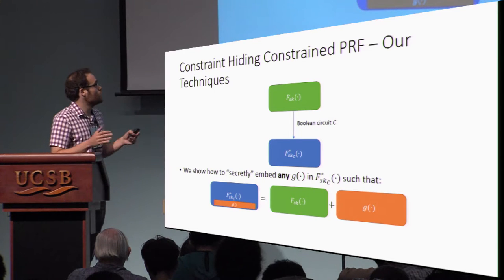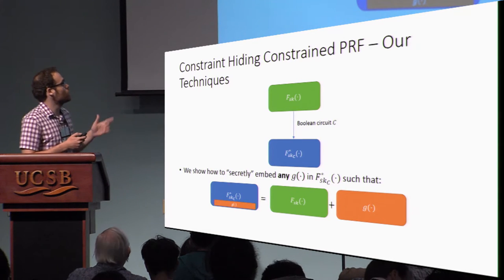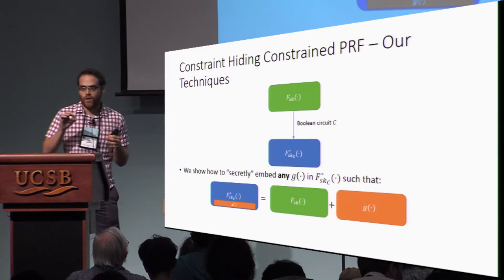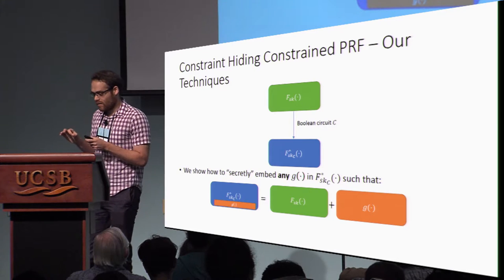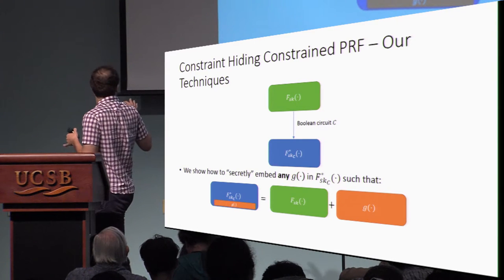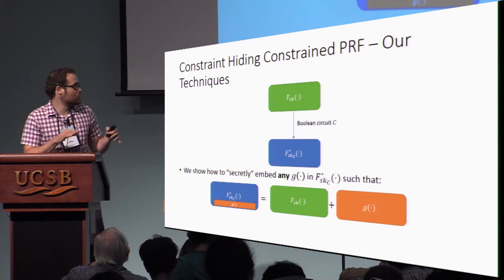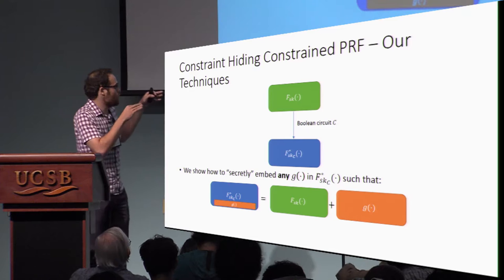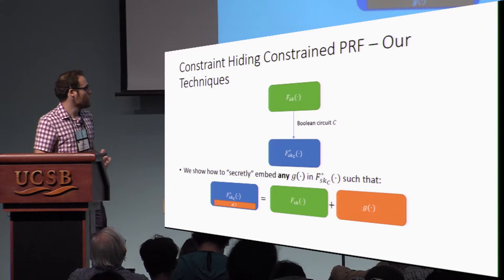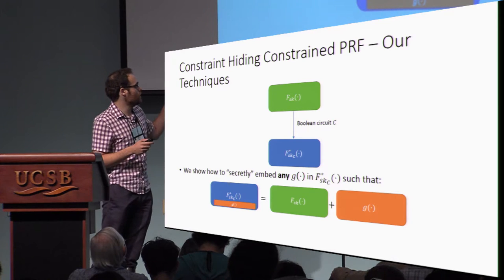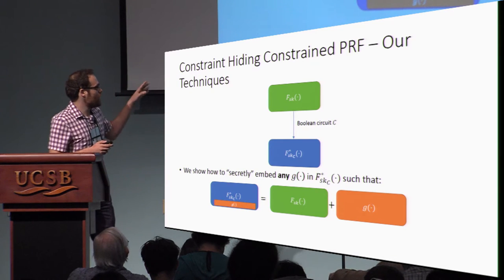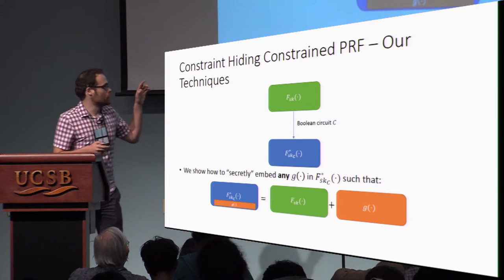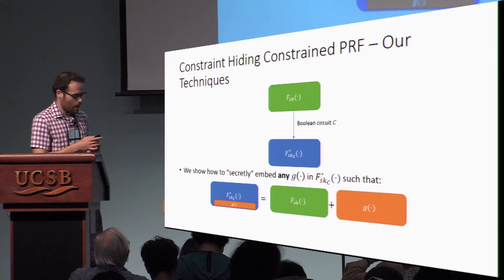Let's have a brief high-level overview of our techniques. Our core technique is a way to secretly embed any function G — and by any function G, in particular I mean functions G that are independent of the PRF — inside the constrained PRF, such that if we evaluate the constrained PRF, the value equals the true value of the PRF plus the value of G evaluated at that point.